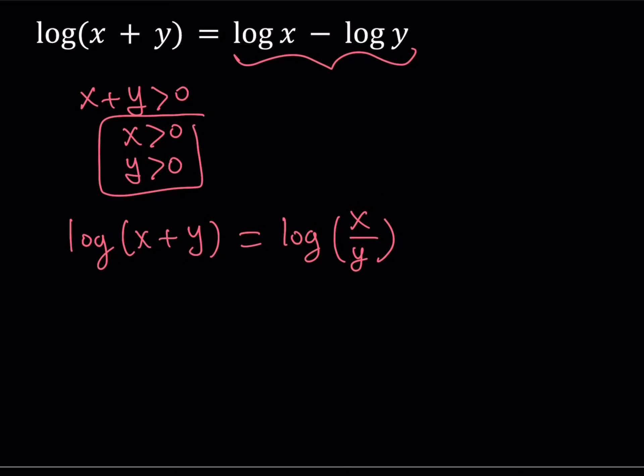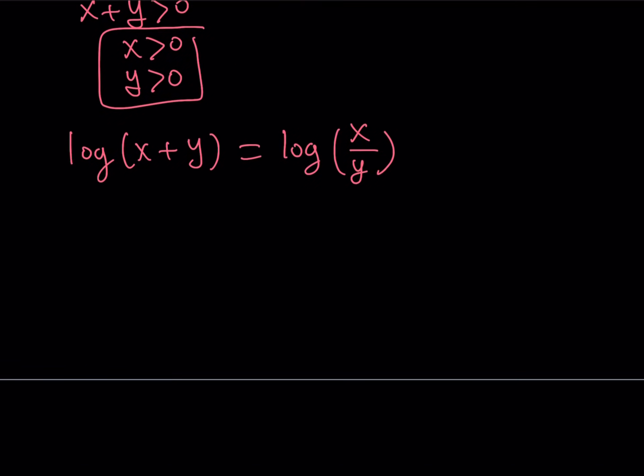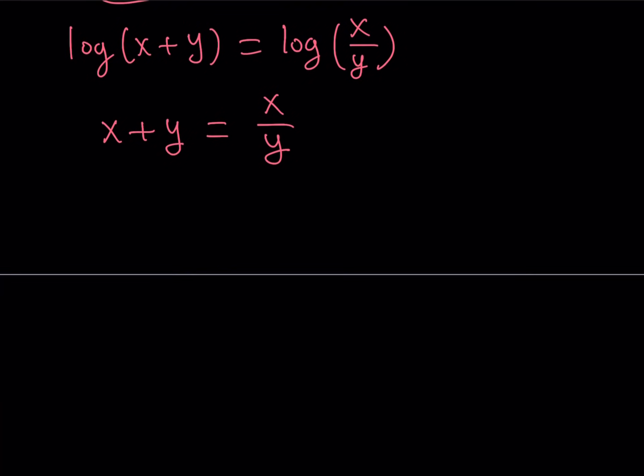So what we're going to do, we have the equality, so we're going to set these two equal. But we'll always remember these conditions. x needs to be positive, and y needs to be positive. So from here, we get x plus y is equal to x over y. Obviously, y is positive. Therefore, we don't have the problem of y being equal to 0. So this is always going to be defined. Let's go ahead and cross multiply. We get xy plus y squared is equal to x.